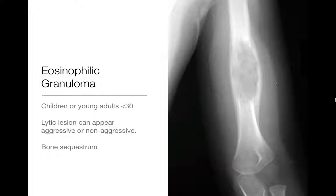Next up, eosinophilic granuloma — only consider this in children or young adults. Please don't think about eosinophilic granuloma in adults only; you're likely to be wrong. It can be single or multiple, and can look very benign or very aggressive. Here's a four-year-old with a geographic lytic lesion with a wide zone of transition and periosteal reaction that looks a little laminated and scary — but it turned out to be eosinophilic granuloma. Classically you'll see a bony sequestrum in skull lesions. Not statistically likely to occur in people over 30 or so.